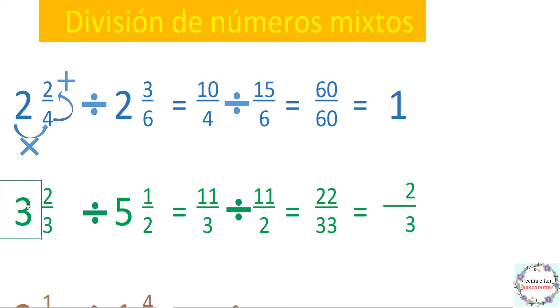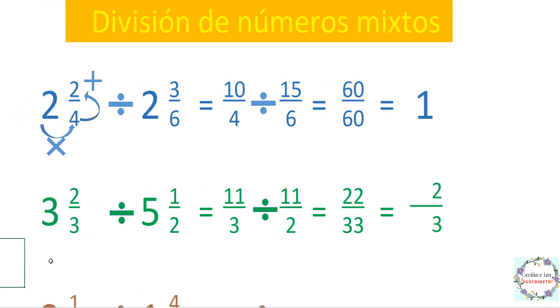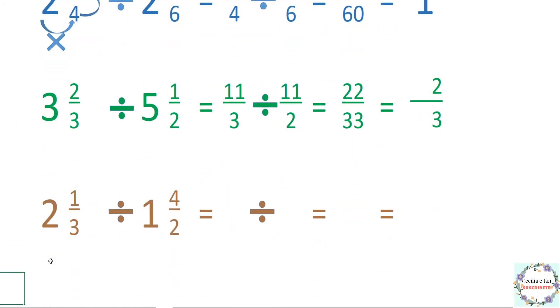Si dividimos 3 enteros 2 tercios entre 5 enteros y 1 medio, el resultado son 2 tercios. Bueno, ahora vamos con la siguiente operación.